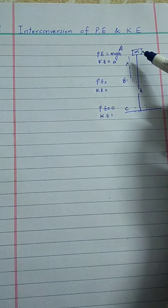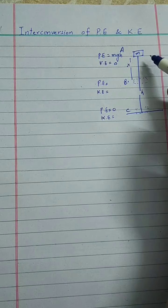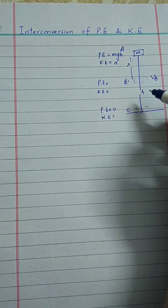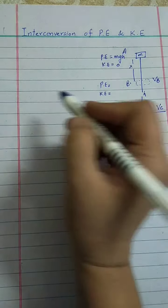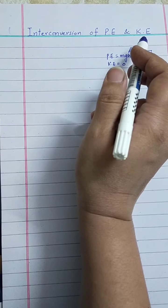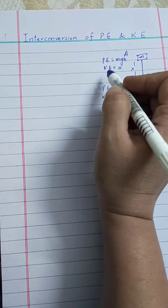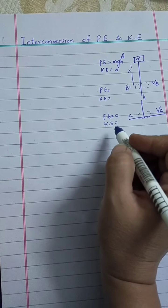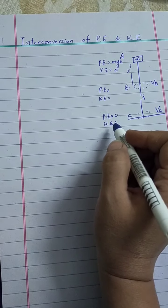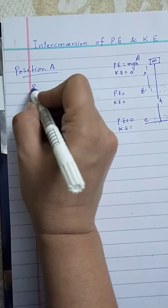The body is dropped at point A with initial velocity zero. It passes through point B and reaches point C, where its velocity is vc. We have three points, and the topic of interconversion of potential energy and kinetic energy states that the total energy at every point should be the same. This means the sum of potential energy and kinetic energy at point A should equal the sum at point B, and both should equal the sum at point C. So first we find the total energy at position A.